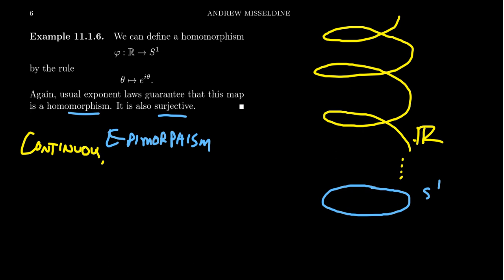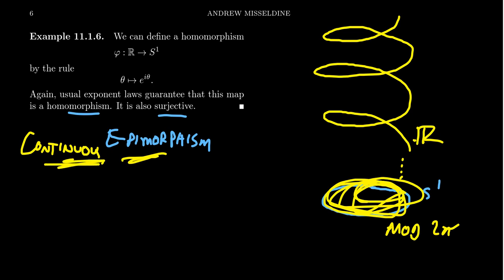It's kind of, it'll just wrap around. So it just wraps around and around and around. You're basically working mod two pi in this situation here. And so this algebra is actually compatible with the geometry. This is a continuous epimorphism.